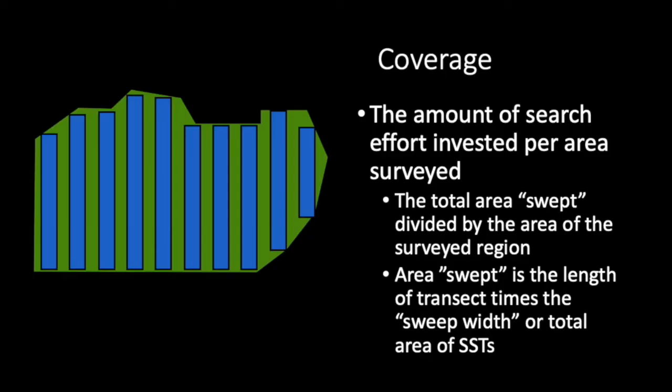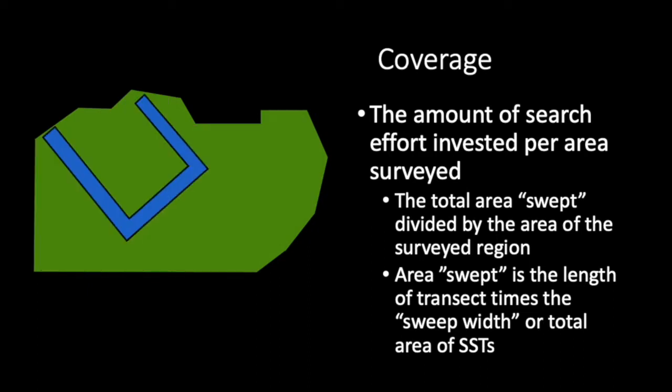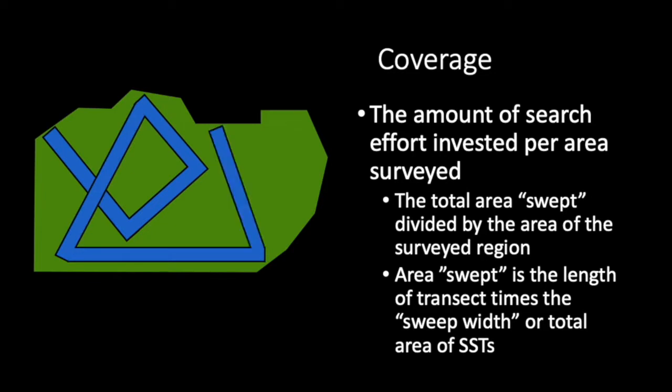A concept closely related to intensity is coverage, which is the percentage of the surveyed area which is effectively swept by the surveyors. It's just the total area within which we'd expect to have found targets, here shown in blue, divided by the total surveyed region, here in green. Although here I've shown coverage for parallel transects in a regular region, the coverage would be exactly the same if we rearranged those transects so that they wandered all over the region randomly.